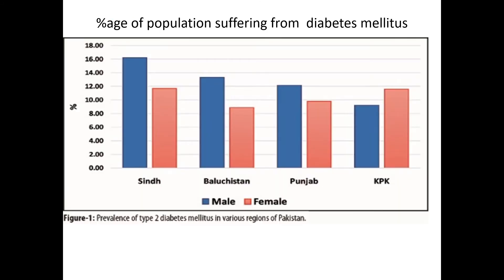Here is a graph showing the prevalence of diabetes in Pakistan across different provinces. In Sindh, approximately 16 percent of males and 11 to 12 percent of females are suffering from diabetes mellitus. In KPK, approximately 9 percent of males suffer from diabetes, while females suffer more. KPK has a lower prevalence of diabetes compared to Sindh and Punjab.